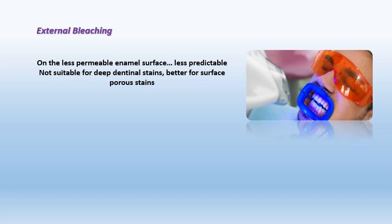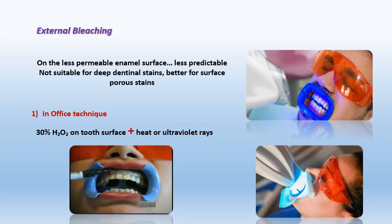External bleaching involves application of the bleaching agent on the external surface of the tooth, over the enamel. Since enamel is less permeable than dentine, some scientists say external bleaching is less predictable and not suitable for deep dentinal stains — it is better for surface and porous stains. Some resistant stains may need both internal and external bleaching combined. External bleaching is classified into: first, the in-office technique, where a high concentration hydrogen peroxide or superoxone of 30 to 35 percent is applied directly onto the tooth surface in the clinic.